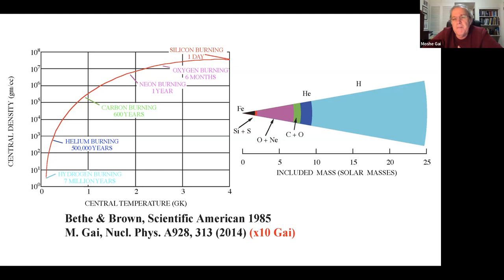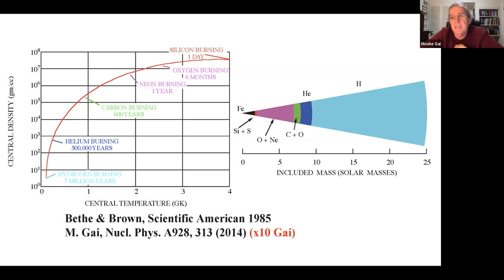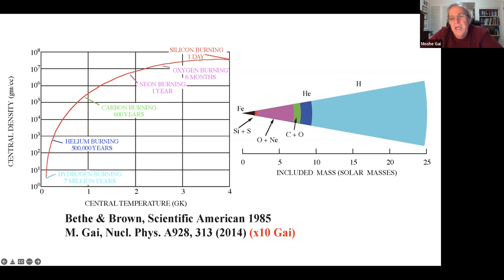When the iron core reaches 1.4 solar masses - the Chandrasekhar limit - it implodes on itself. You might expect it would then explode, but the shock does not persist - it coalesces. The material is so dense it is opaque to neutrinos. The explosion of the type 2 supernova is driven by neutrinos in a central neutrino bubble - the essence of the Bethe-Brown paper.